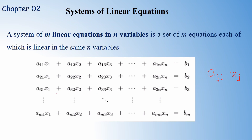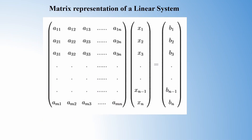Now, this is the matrix representation of the linear system. For the first equation, the coefficients a11, a12, a13, ..., a1n are assembled in the first row. The coefficients of the second equation are assembled in the second row, and likewise for the m-th equation the coefficients are assembled in the m-th row. So we get an m×n matrix with m rows and n columns.